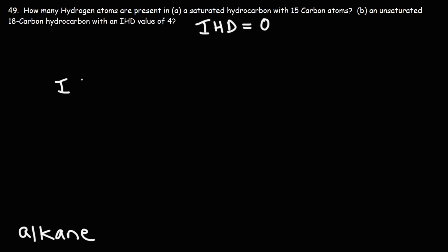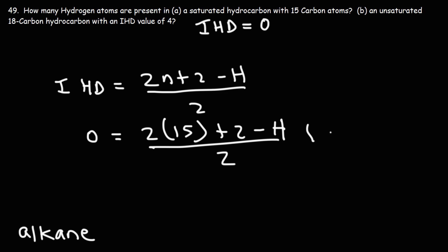So we could use the IHD formula to calculate the number of hydrogen atoms. So we have an IHD of zero. We have 15 carbon atoms. And we need to solve for hydrogen. So multiplying both sides by two, we could cancel this two. Zero times two is simply zero. Two times 15 is 30.